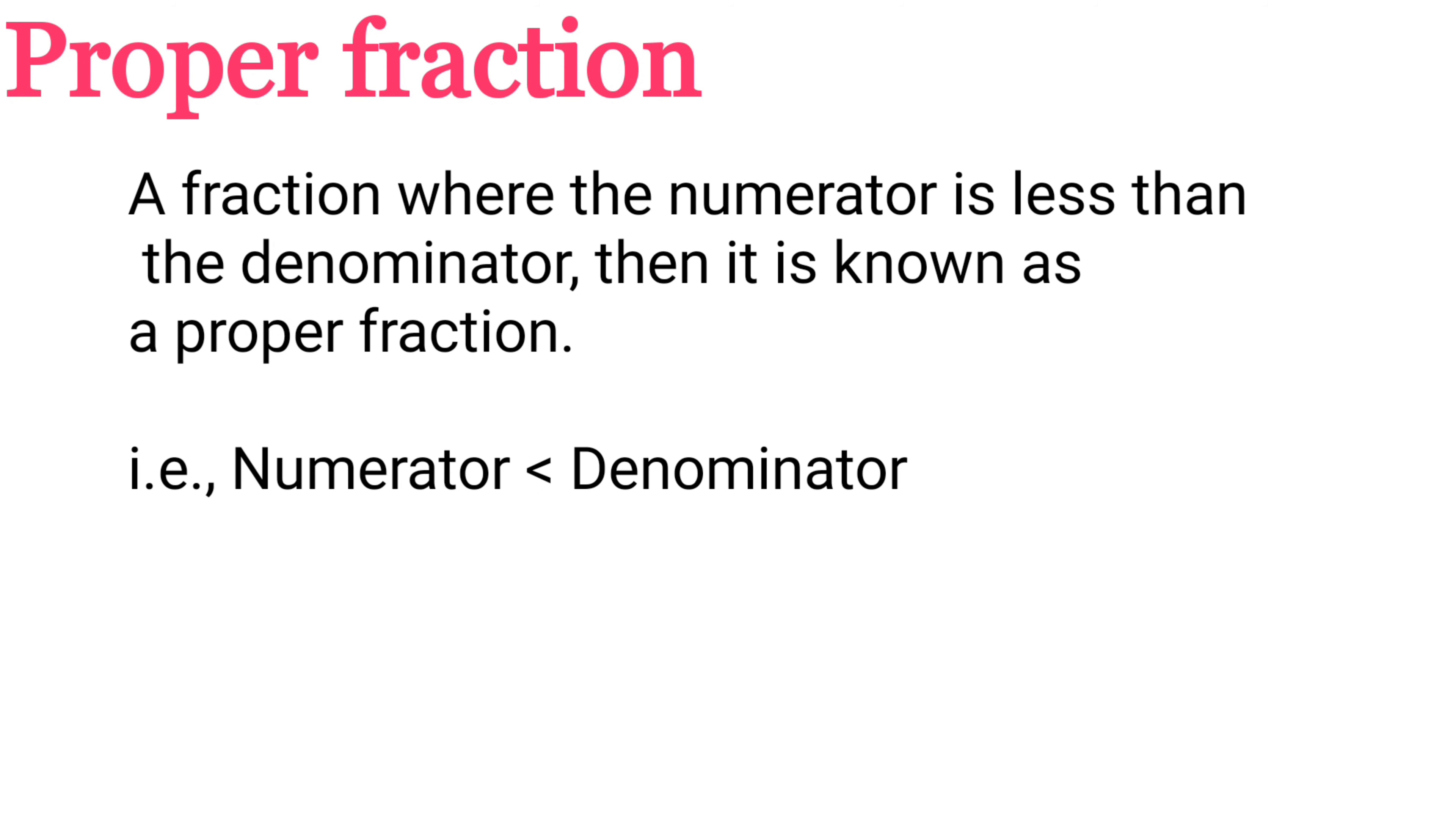First one, proper fraction. A fraction where the numerator is less than the denominator is known as a proper fraction. That is, numerator < denominator. For example, 3/5. Here, 3 is smaller, 5 is larger. 3 is the numerator, 5 is the denominator.